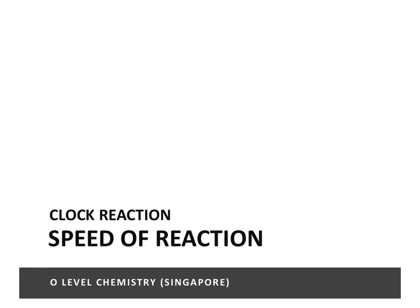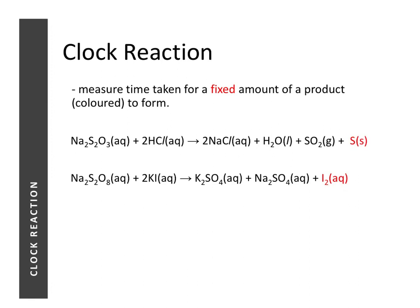In this lesson we're going to learn about clock reactions. Clock reactions are actually speed of reaction experiments where we measure the time taken for a fixed amount of a product to form, and the product is usually colored. The two most common reactions used as clock reactions are: the first one producing sulfur, which is a yellow solid, and the second one producing iodine, which is a brown solution.